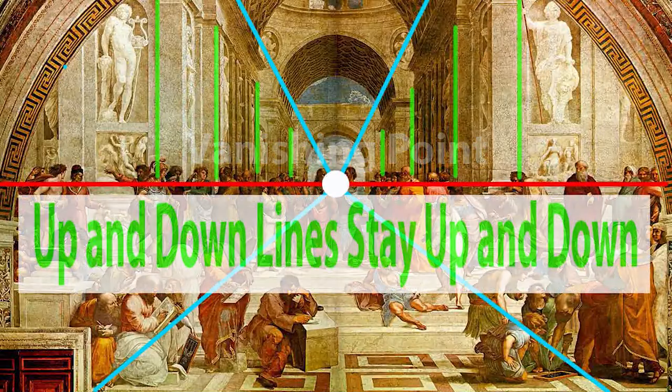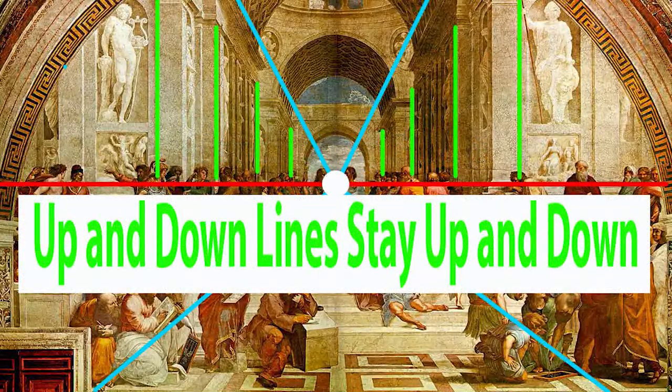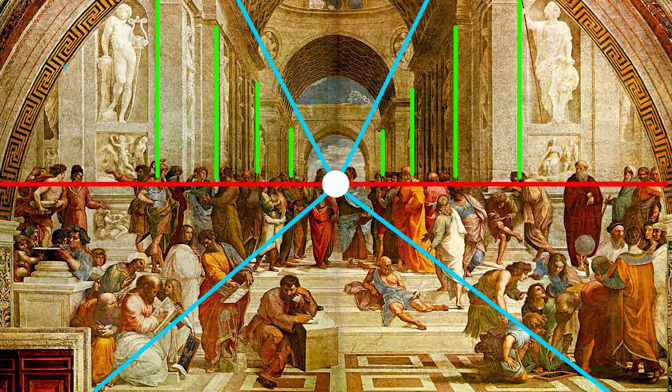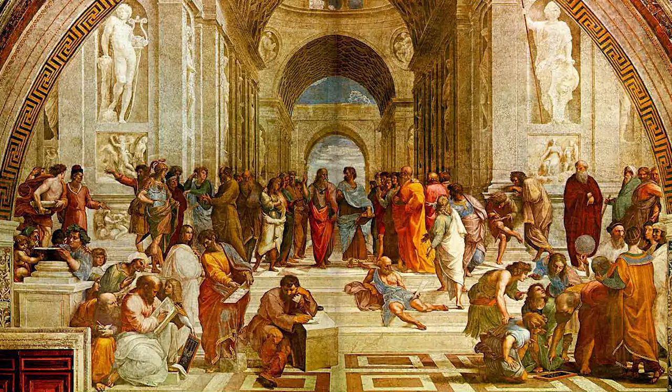The thing to remember is that when we see a picture like this, where everything goes back to the vanishing point, remember that the up and down lines stay up and down, like in this picture right here. That's something in particular that we're going to watch for and look at. So let's go ahead and get started on our first exercise.